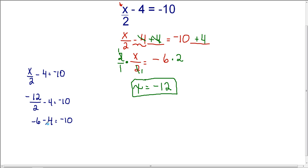I'm going to use my keep, change, change rule because this is a subtraction problem, and I'm dealing with integers. So keep negative 6, change this to plus, and this to negative.